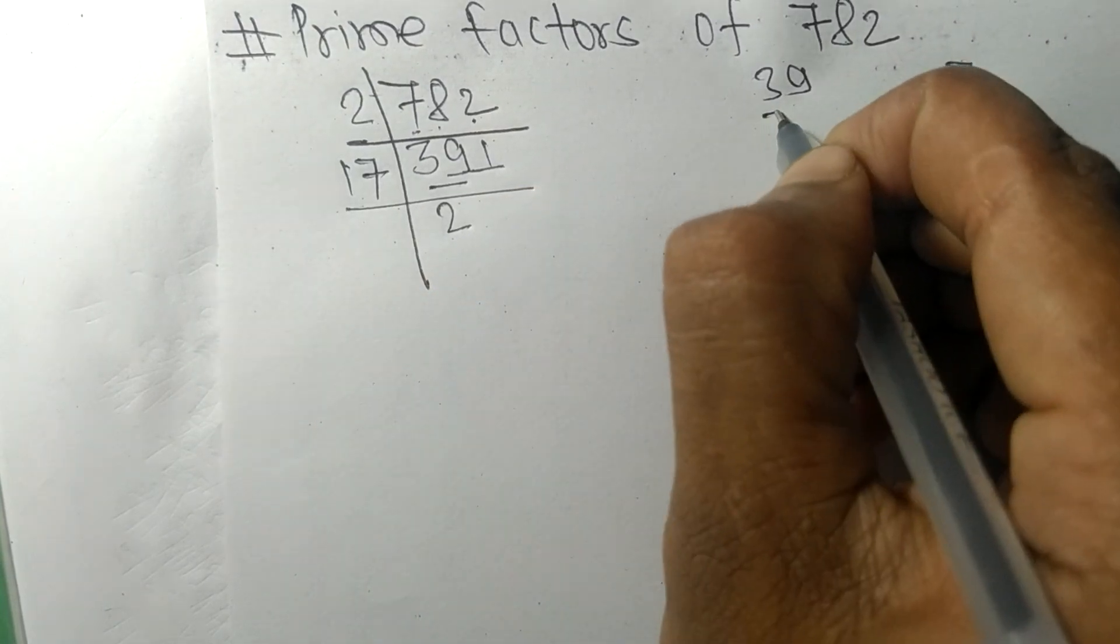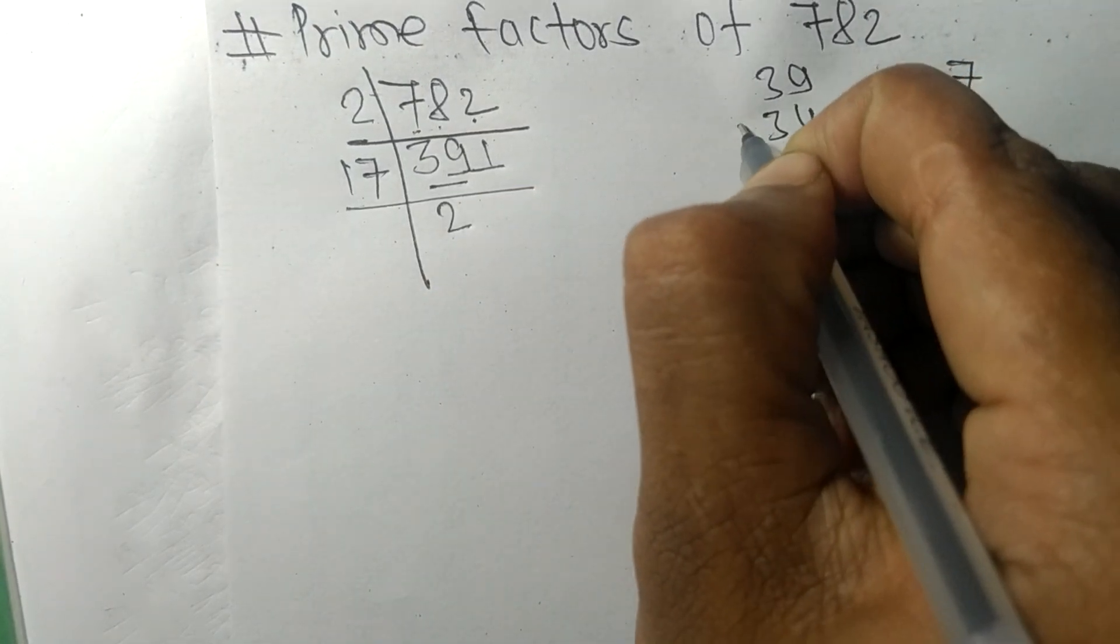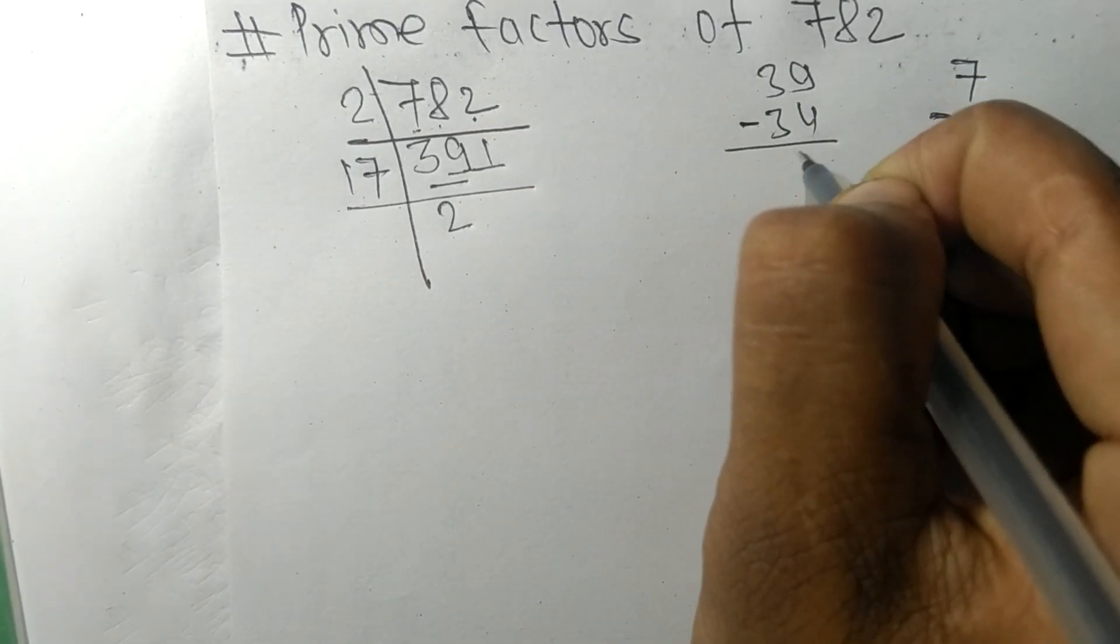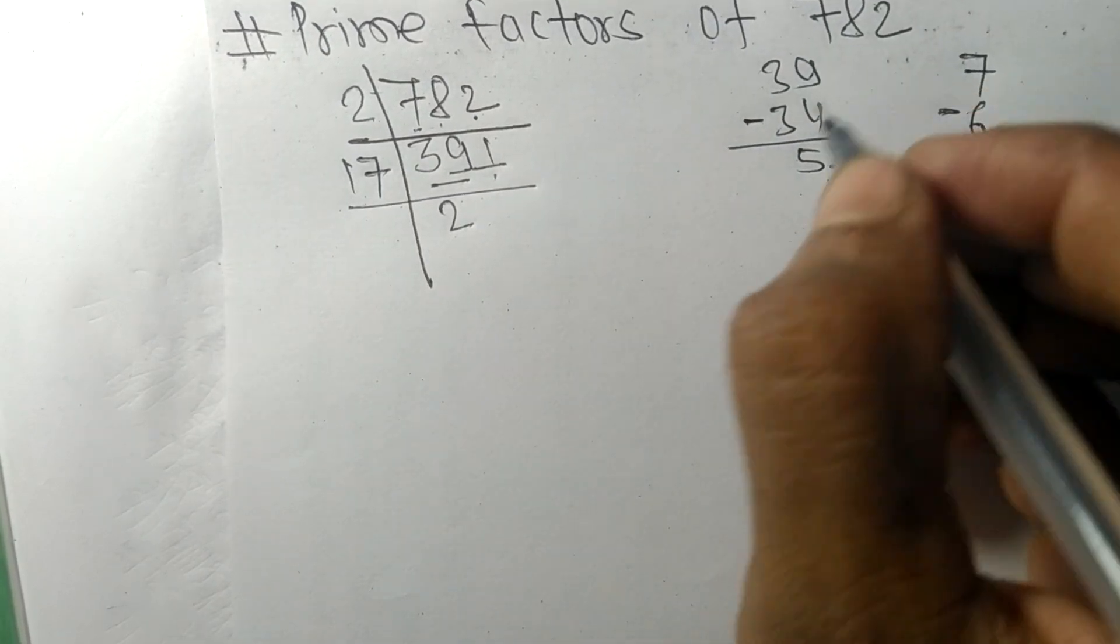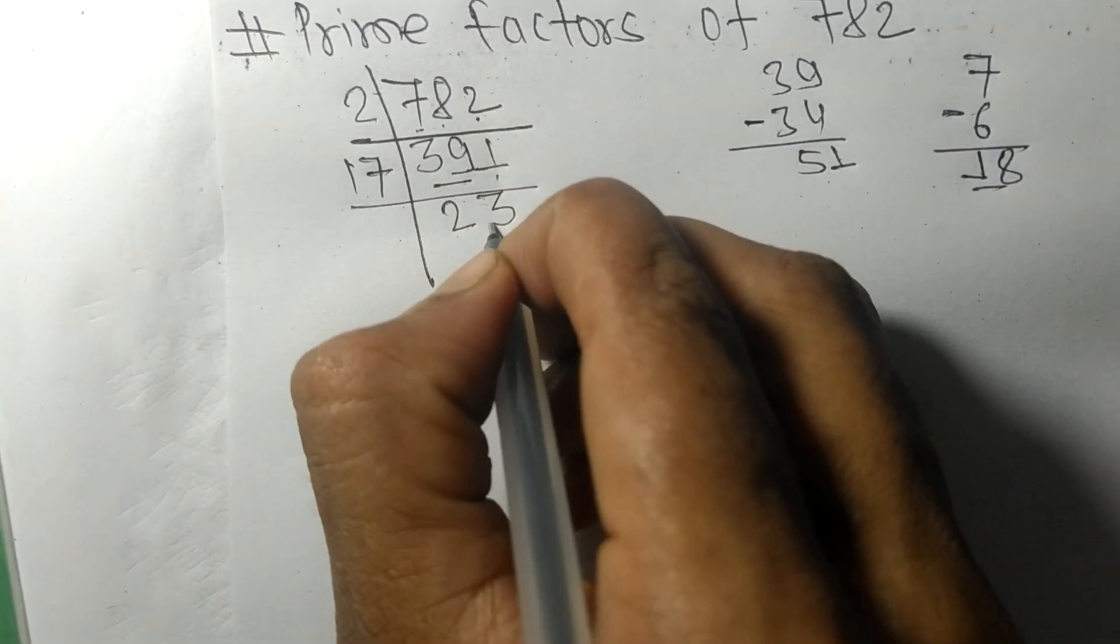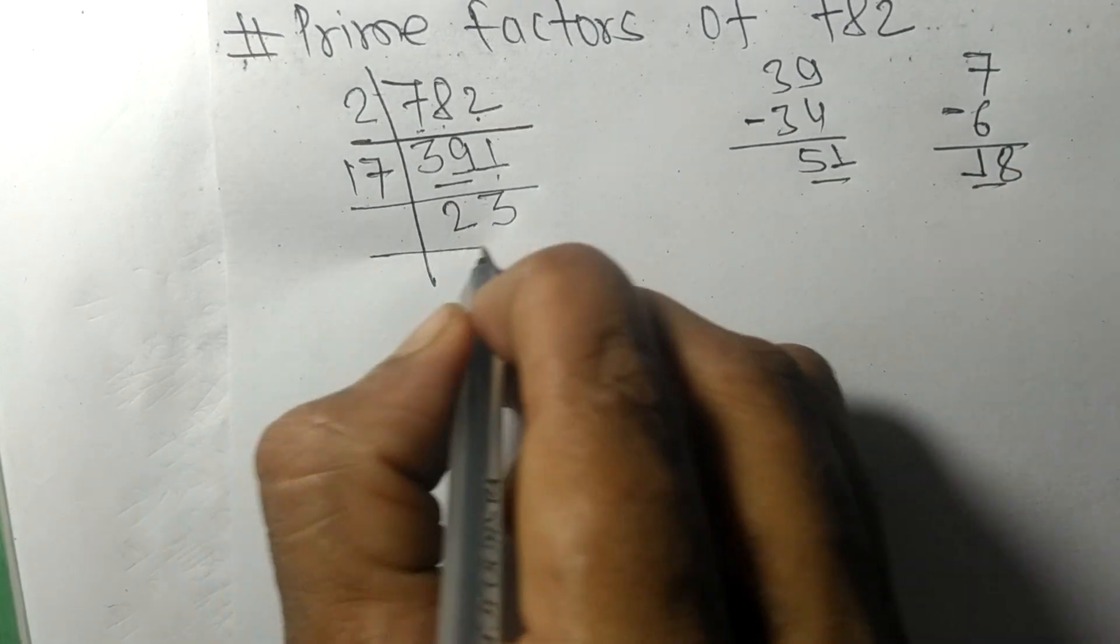On subtracting we get 5, and this 1. 51, so 17 times 3 means 51.